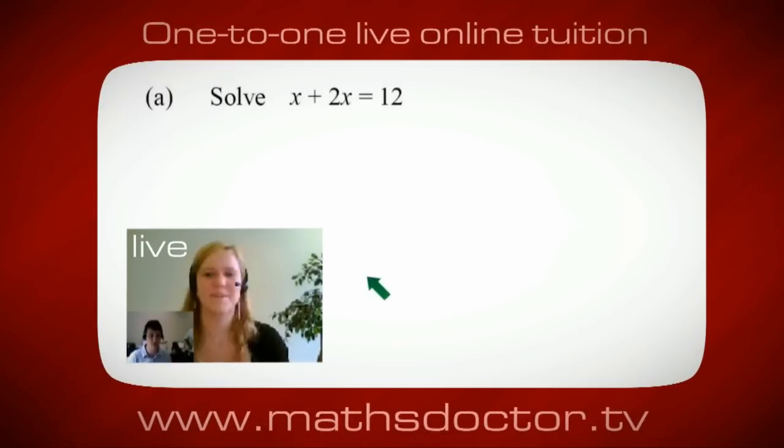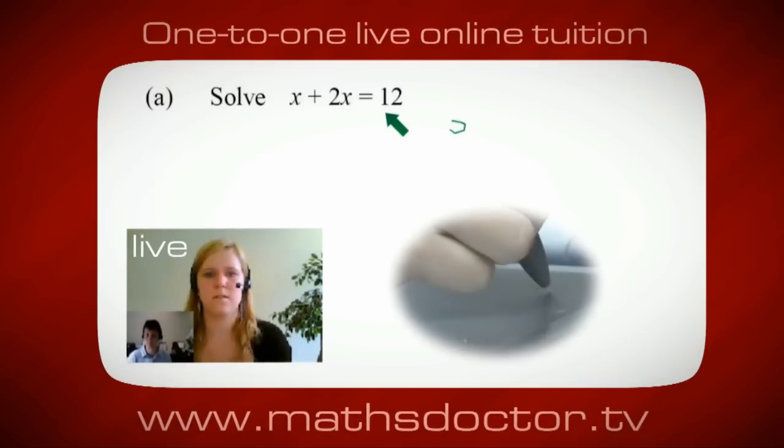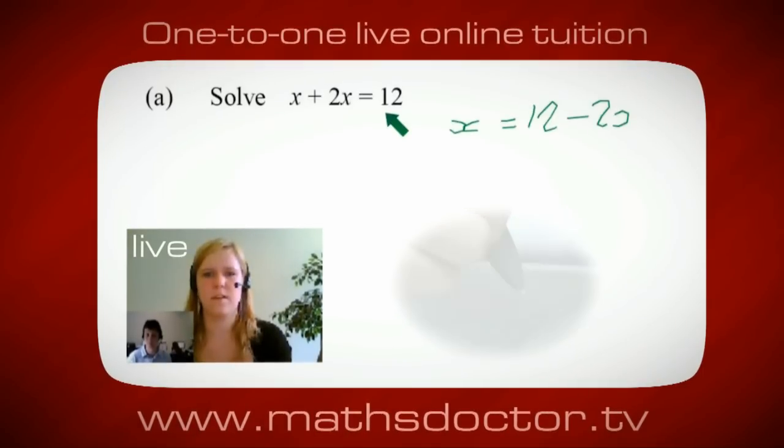Okay, Marie, so let's have a look at this one. So solve x plus 2x equals 12. So what do you think you do first? Okay, well, I want x on its own, so I would put x equals 12 minus 2x.